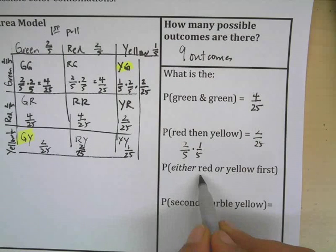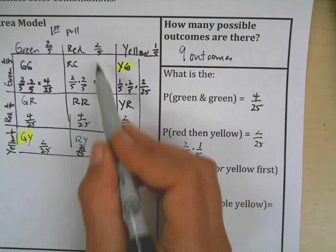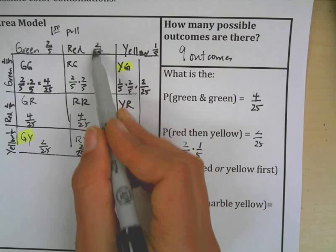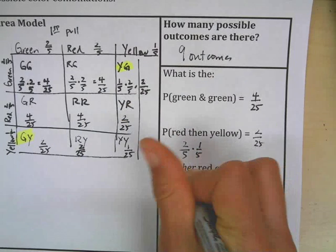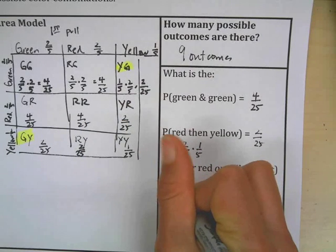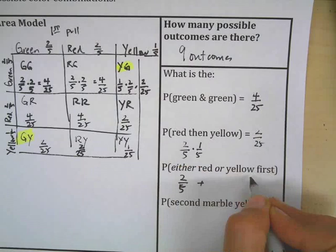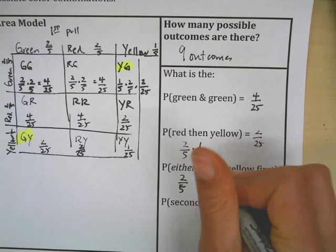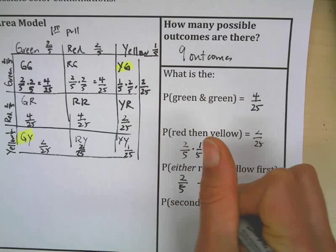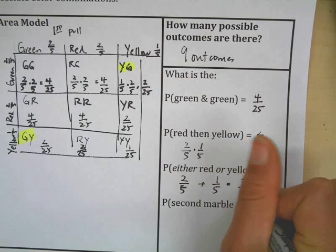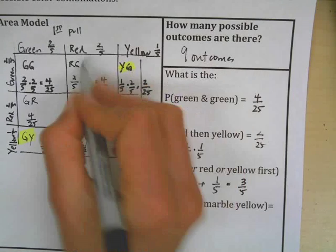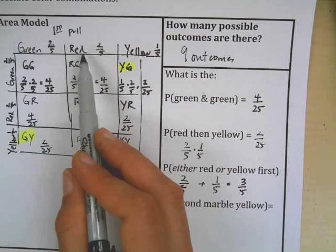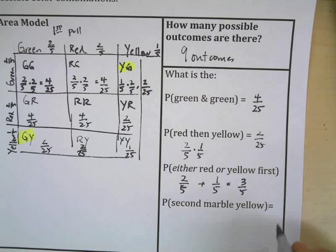What's the probability of either red first or yellow first? Well, there's two-fifths probability in terms of my first pull that I could get red, and I can also pick yellow first. The other possibility is yellow first, so that's one-fifth that I could do that. So together, three-fifths of the things that I can do would be either red first or yellow first.